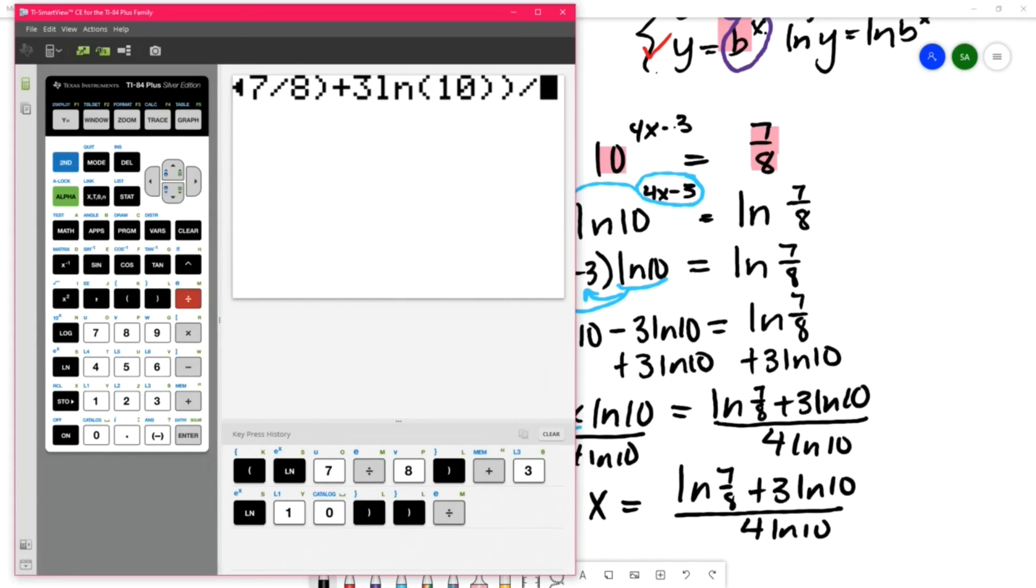So we want to divide by 4 natural log of 10. We're going to close parentheses for that log and close parentheses for the denominator.